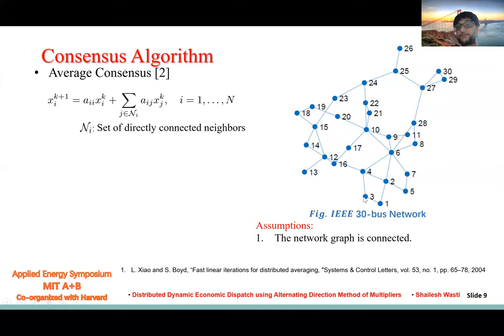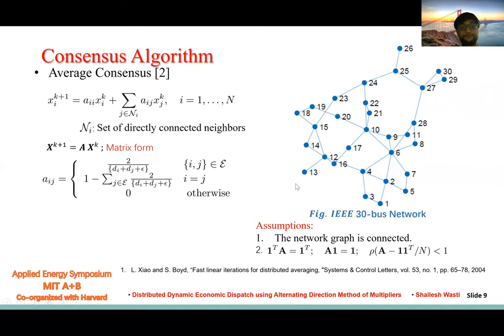Similarly, node 3 can look into node 4 and node 1, and it can estimate the average of the entire network. Obviously, each node has a different estimate on the average, but the average is one value. If A is chosen carefully after subsequent iteration, their estimate of average leads to one consensus value, and that consensus is the average.